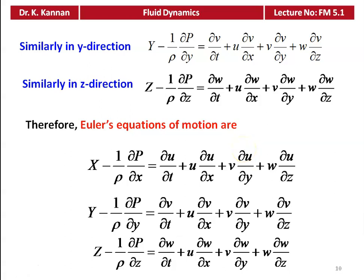Normally, we do not deal with the complete three-dimensional form. At this level, we take one-dimensional flow, so the y and z direction equations are dropped. Using only the x-direction equation, we can further derive the pressure or velocity of the flow field.